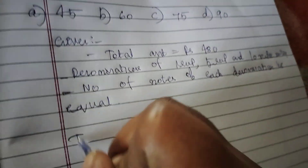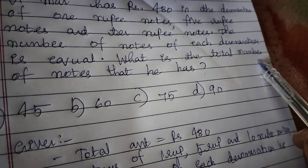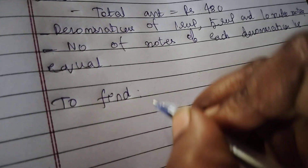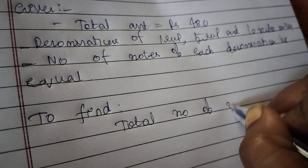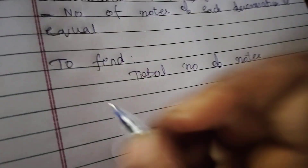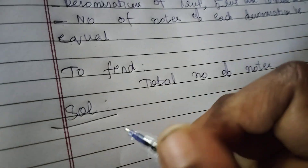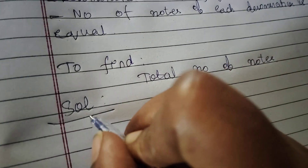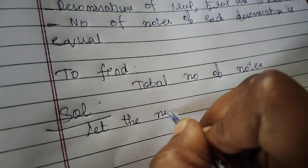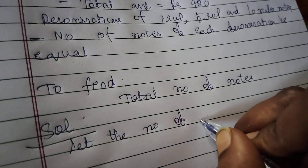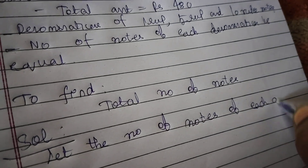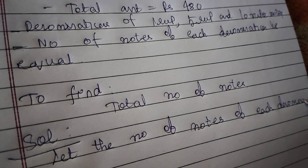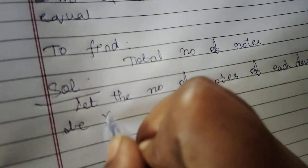What we have to find? To find the total number of notes. Solution: let the number of notes of each denomination be x.